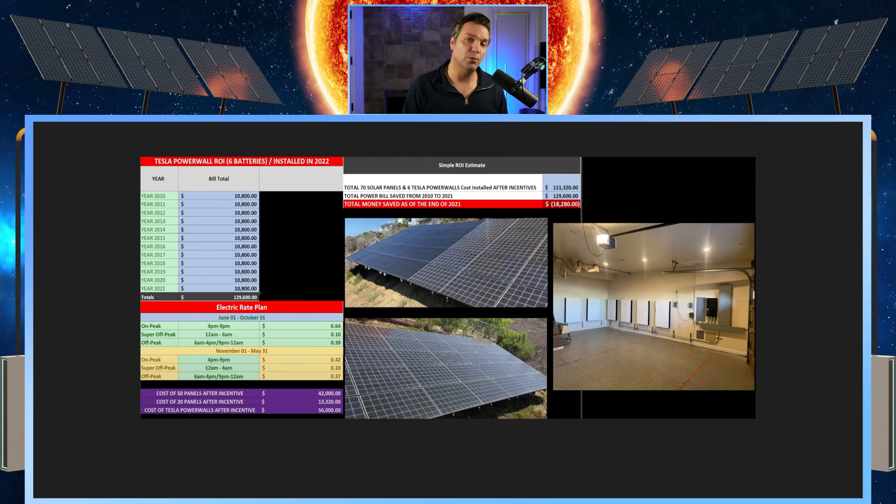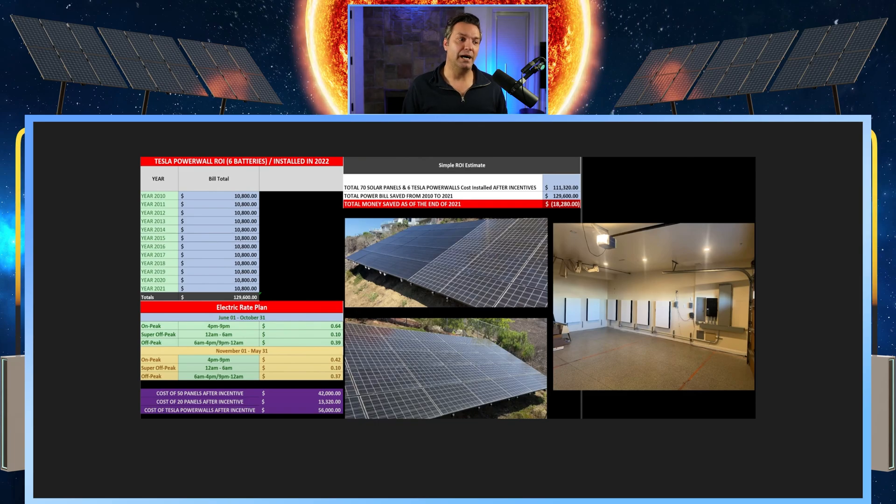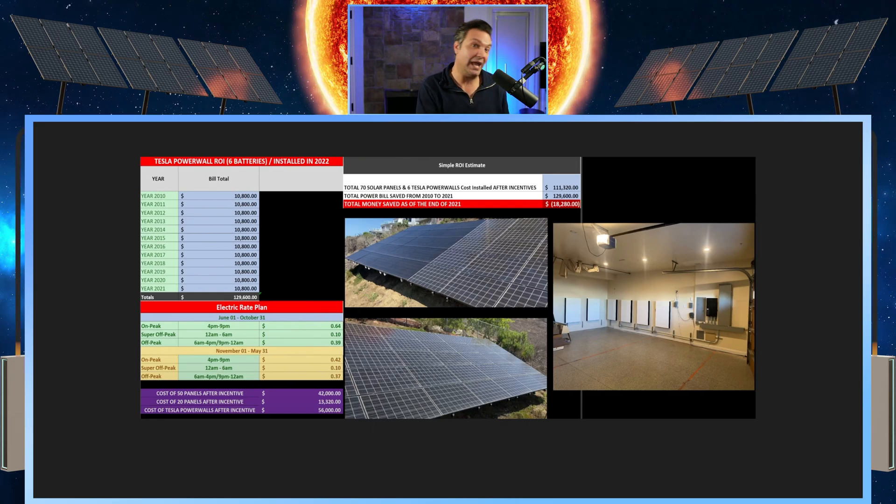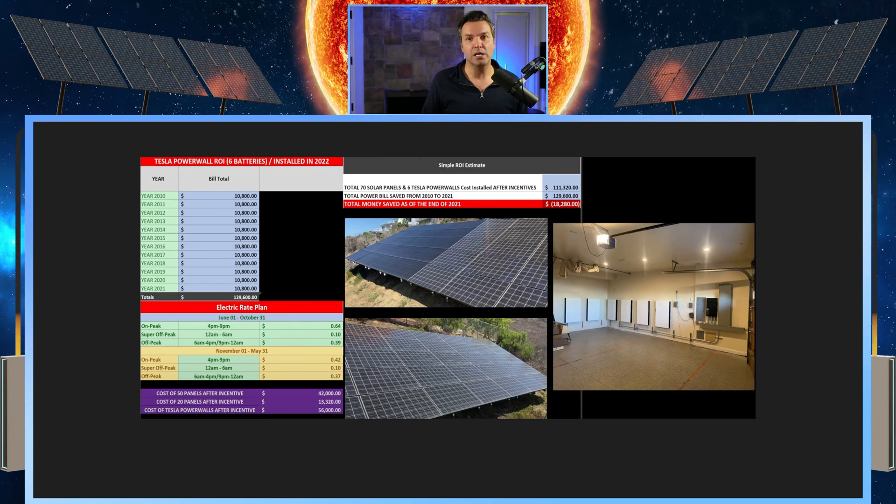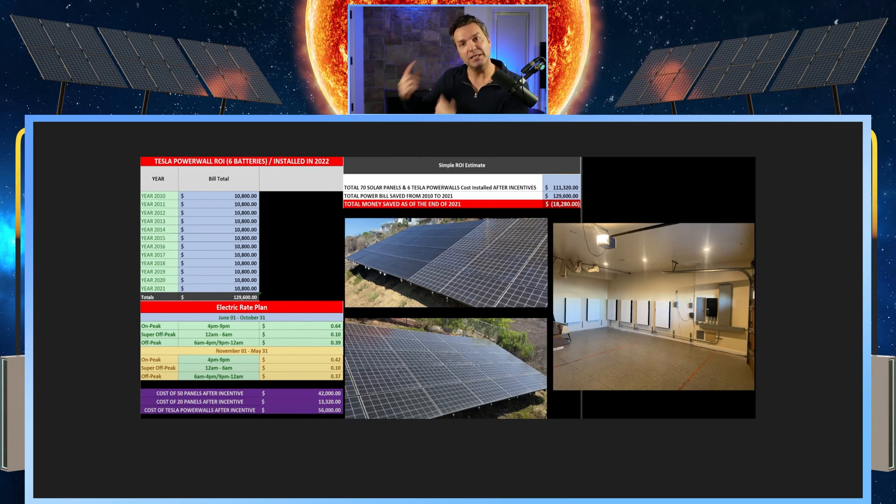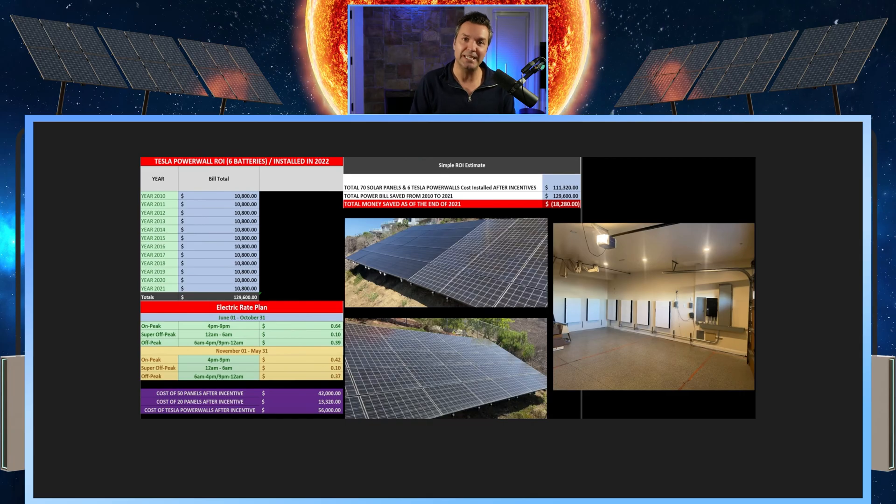At the end of 2021, after the solar panels, after the cost of the Powerwalls, I am negative $18,280. So I've still saved, after the cost of Powerwalls and solar, another $18,280. At the end of 2021, it's 2023, so that amount is continuing to pile up. So I'm still continuing to receive that benefit.